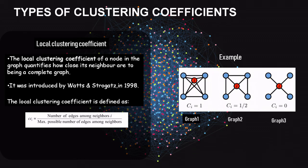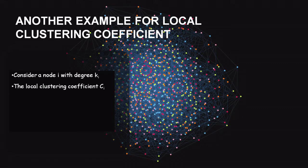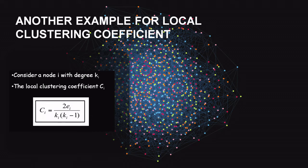Consider three graphs — graph 1, 2, and 3 — and node i shaded in red. For graph 3, node i's neighbors are not connected at all, so the clustering coefficient is zero because the numerator (edges among neighbors) is zero. For graph 1, the number of edges among neighbors equals the maximum possible, giving a clustering coefficient of 1. For the general formula, with node i of degree ki: the local clustering coefficient Ci equals 2·Ei divided by ki·(ki − 1), where Ei is the number of edges between node i's neighbors.